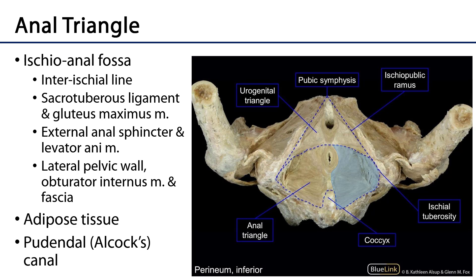As you may recall, the anal triangle is a space bounded posterolaterally by the sacrotuberous ligaments and divided from the urogenital triangle anteriorly by the transverse perineal line. The majority of the anal triangle is going to be occupied by the ischioanal fossae.